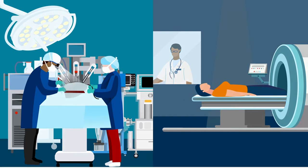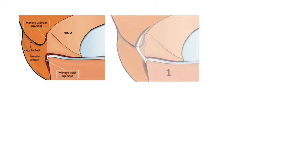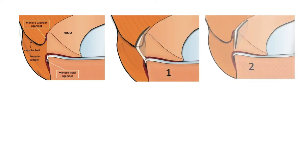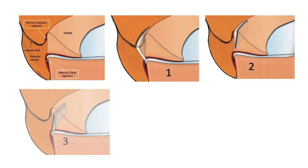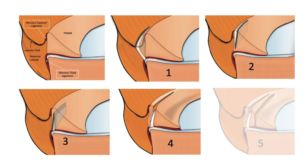When ramp lesions were found, they were categorized into five different subtypes: meniscocapsular lesions, partial superior lesions, partial inferior or hidden lesions, complete tears in the red zone — the part of the meniscus with a blood supply — or complete double tears.